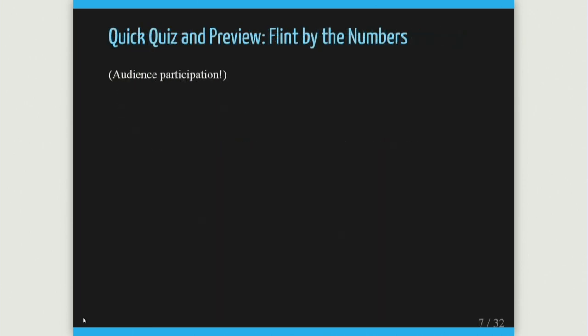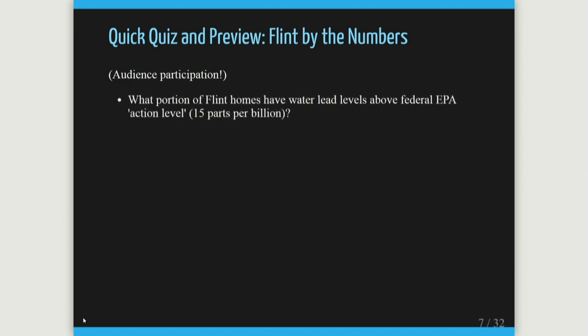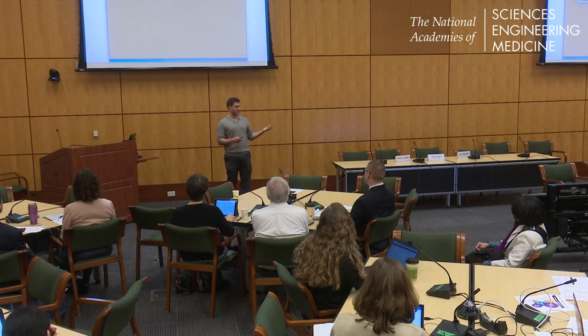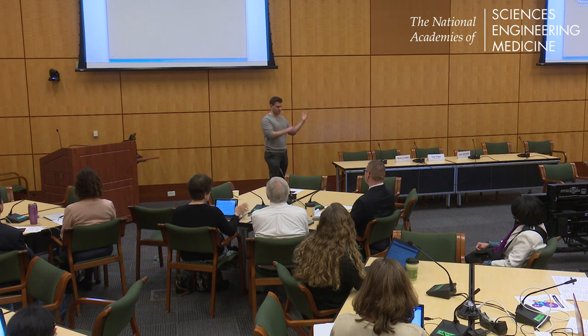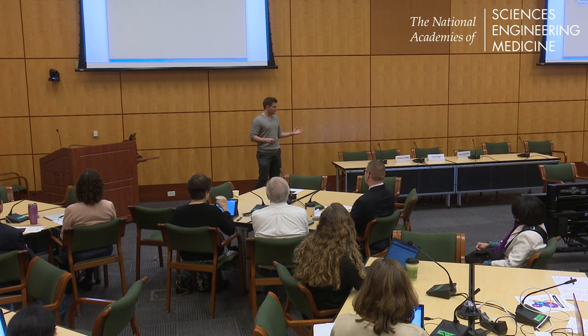Let's do a little audience participation. How many homes were thought to be above the EPA action level? If you measure your water — take the first liter in the morning and sample it for lead — they check in parts per billion. Fifteen parts per billion is the threshold, a result of the lead and copper rule and the Clean Water Act. How many homes in Flint do you think were above this level?